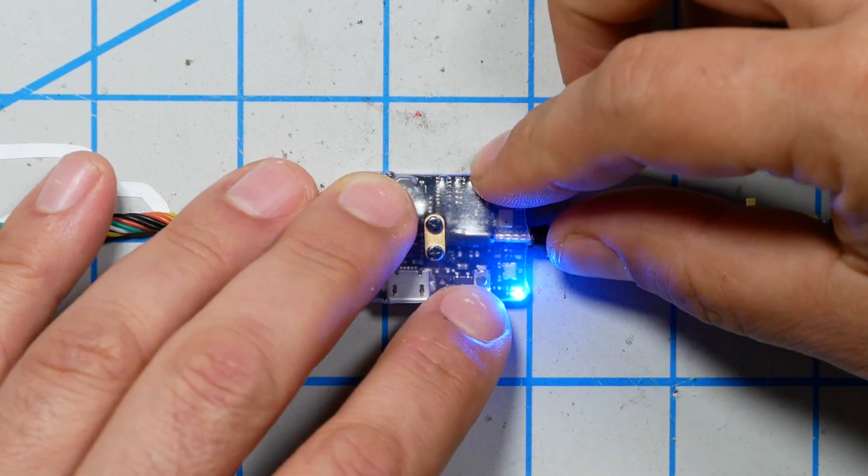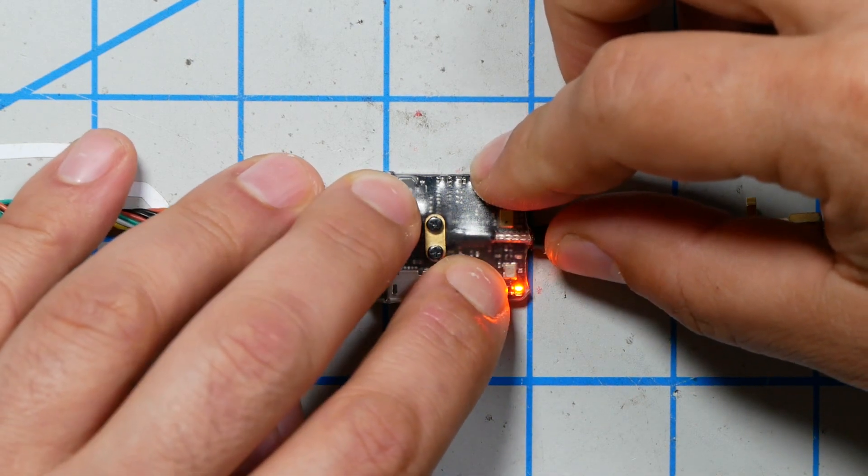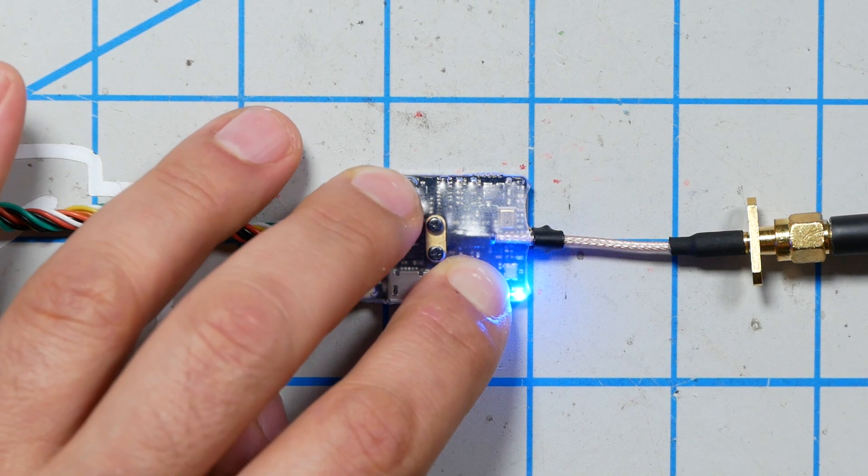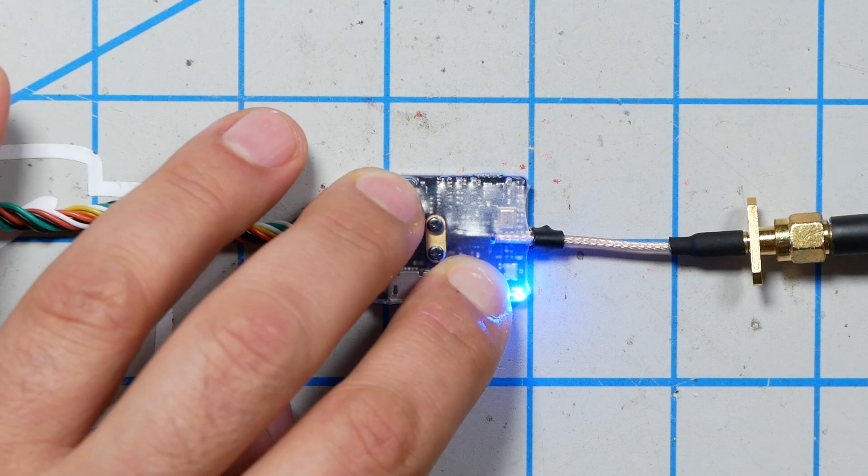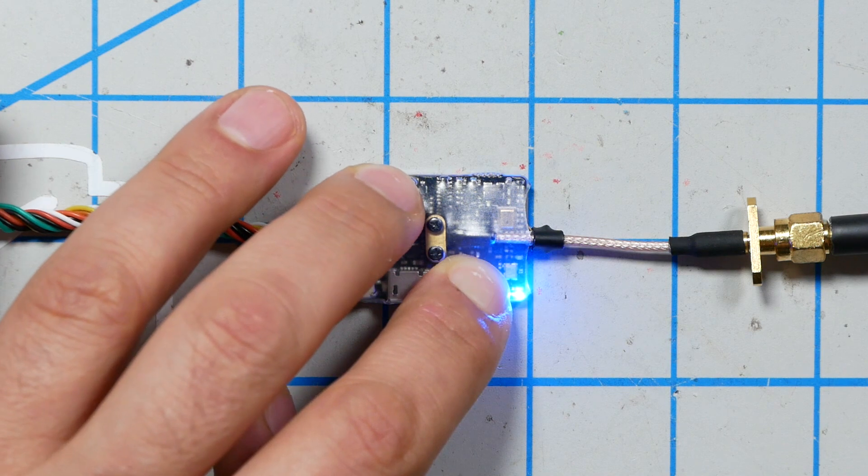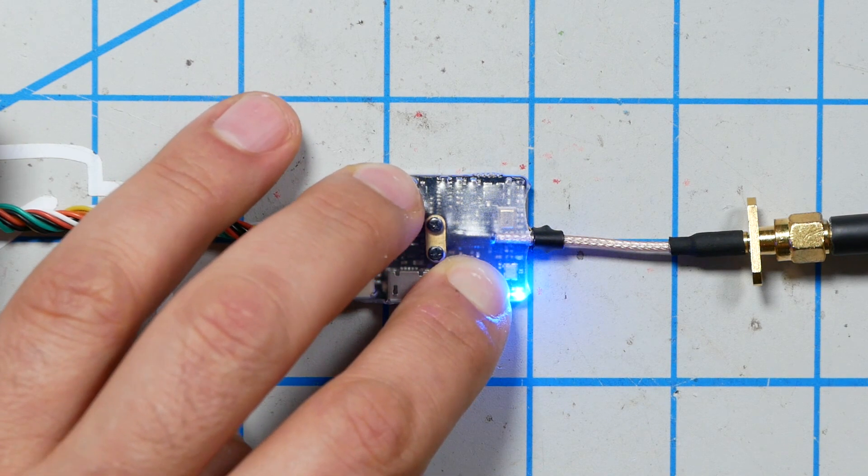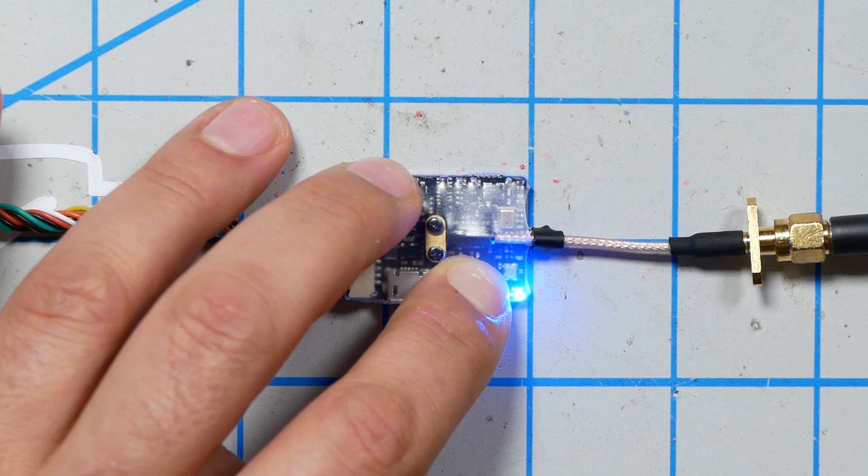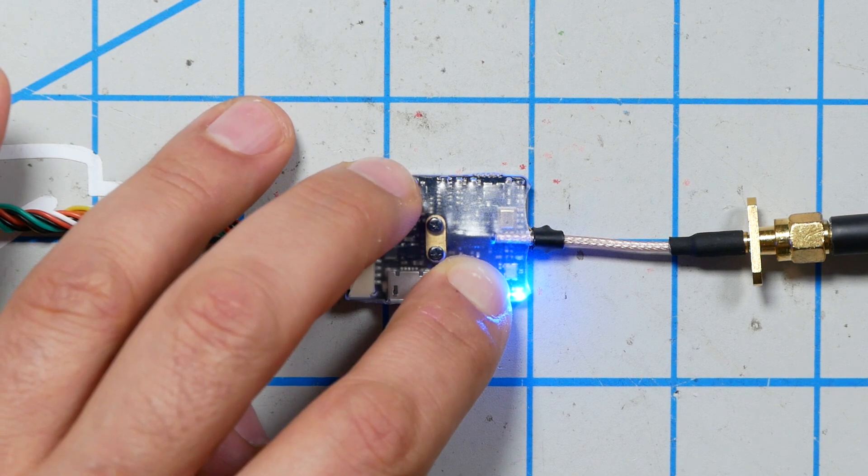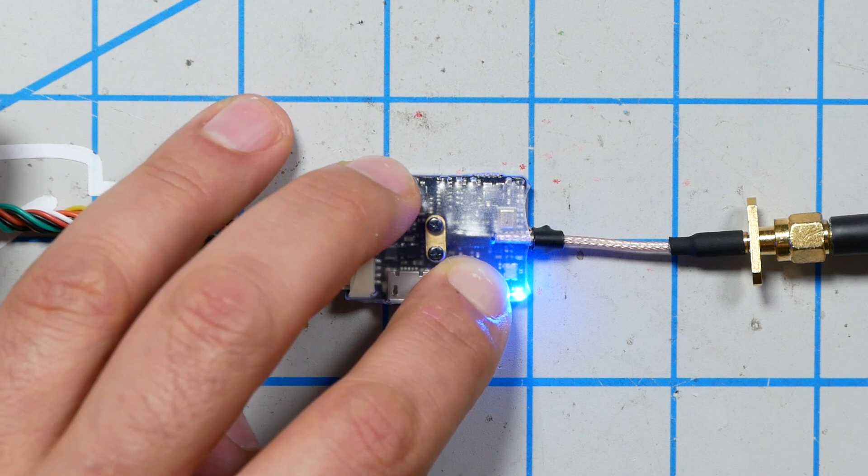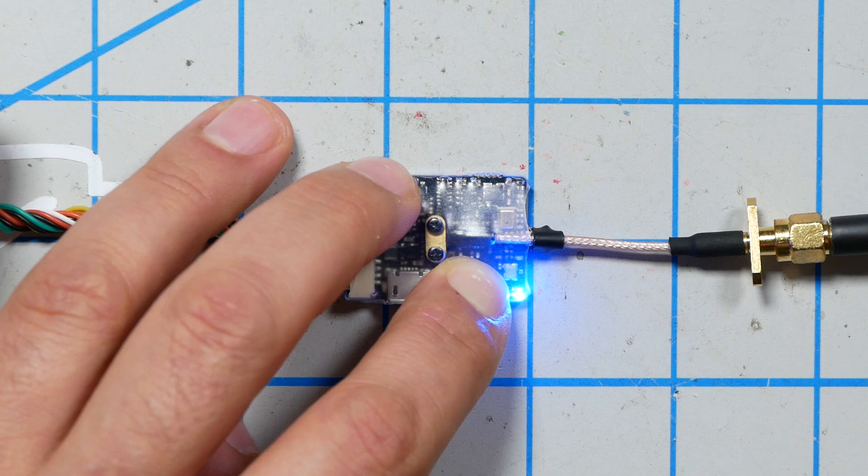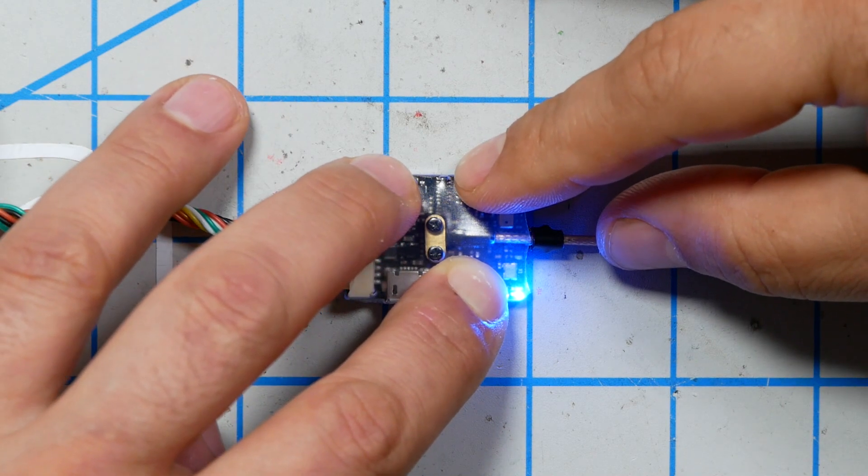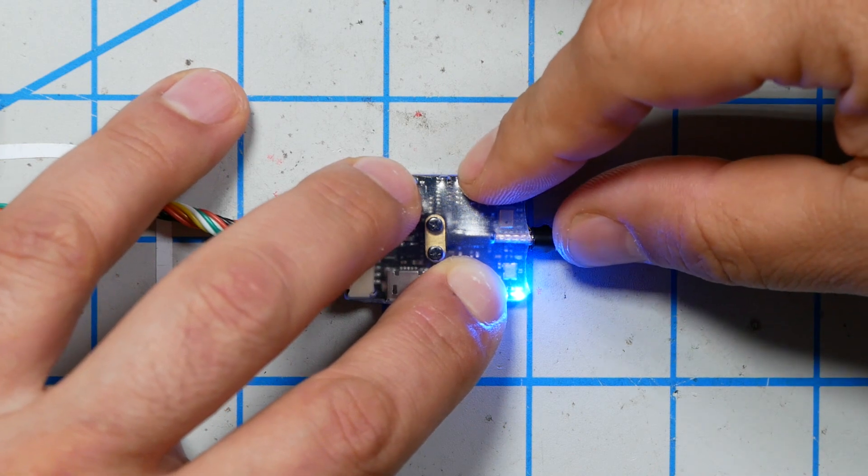And now we are going to hold this button down for 30 seconds and that will unlock the video transmitter. Now the LED is going to do some stuff, but I'm going to hold it down for 30 seconds. The LED goes off, starts blinking. It hasn't been 30 seconds yet. I think it's definitely been 30 seconds. I'm going to let go.